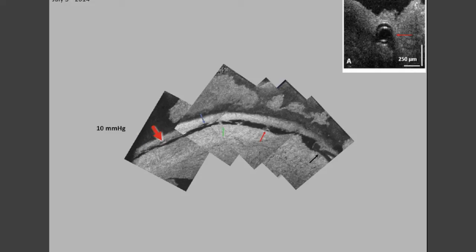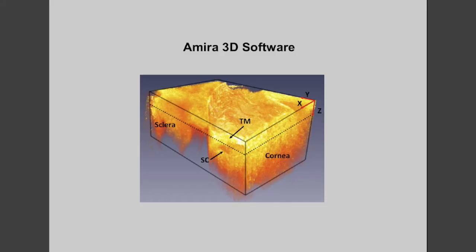We see collector channel entrances — multiple ones which are easily visible with the 3D technique. MIRA 3D software permits looking at the X, Y, and Z axis.